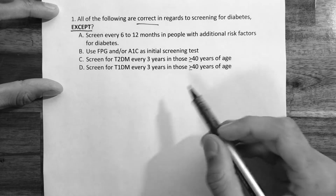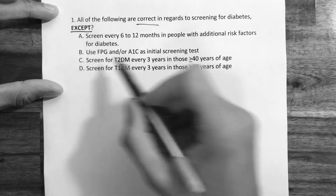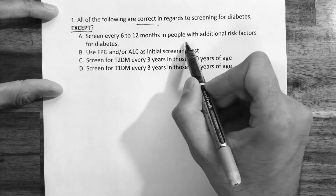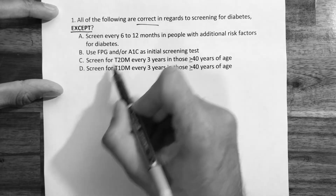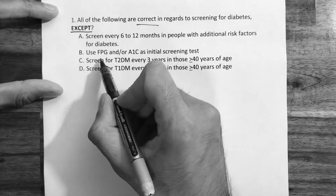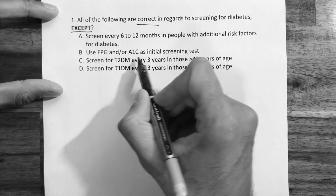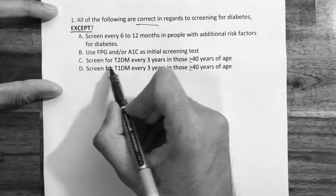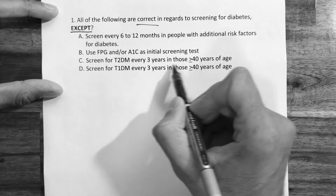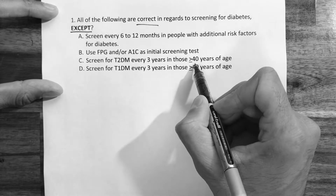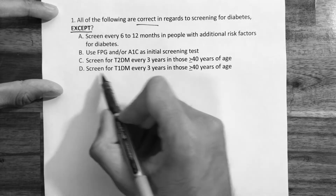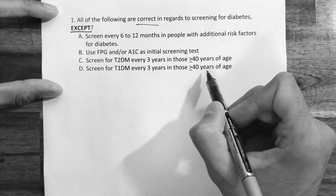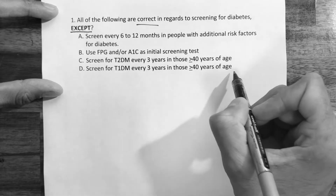Let's go through the options. First: screen every 6 to 12 months in people with additional risk factors for diabetes. Second: use fasting plasma glucose and/or A1c as the initial screening test. Third: screen for type 2 diabetes every three years in those greater than or equal to 40 years of age. Fourth: screen for type 1 diabetes every three years in those greater than or equal to 40 years of age.